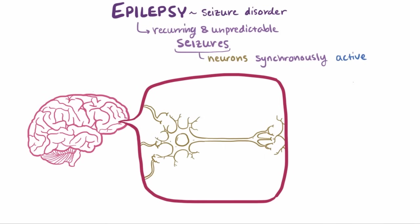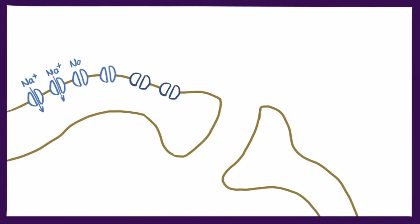When neurons are active, they're firing, or sending a message using electrical signals relayed from neuron to neuron. If you look at a neuron under a microscope, each electrical signal that passes through it is really just ions flowing in and out through protein channels.